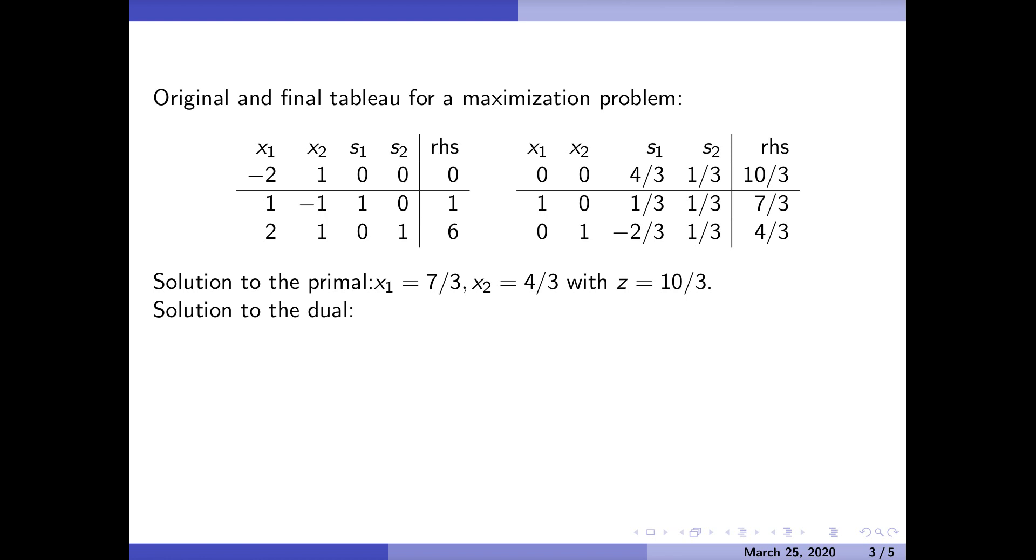Now we want to solve the dual, and we said that the solution to the dual is sitting right in here with the slack variables: 4/3, 1/3. How am I going to check that? We can verify using strong duality to see if this value of the dual gives us the same value of z or w. Let's compute w. The coefficients I'm using are one and six, so one times 4/3 plus six times 1/3 is 10/3, and we see that we do get the same value.